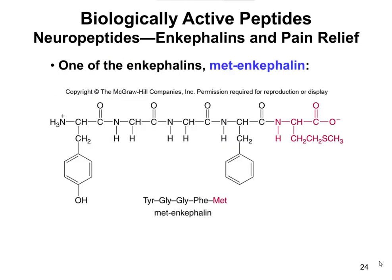Here's the structure of one of these enkephalins — this one is called met-enkephalin. The 'met' refers to the fact that the C-terminal amino acid is a methionine. The sequence of met-enkephalin is tyrosine, glycine, glycine, phenylalanine, and then the methionine as the C-terminal amino acid. So tyrosine is the N-terminal amino acid.